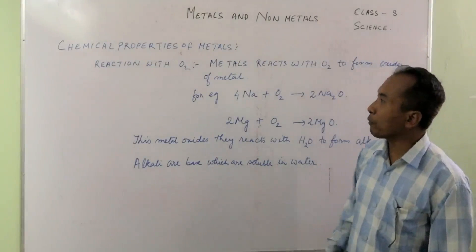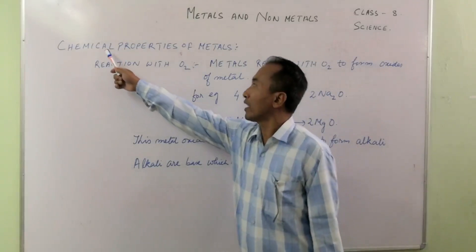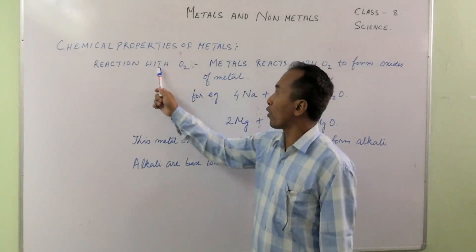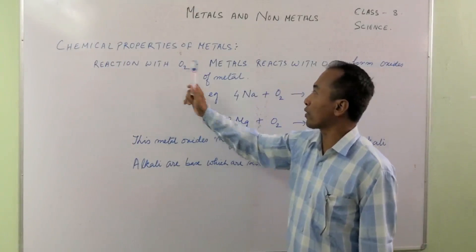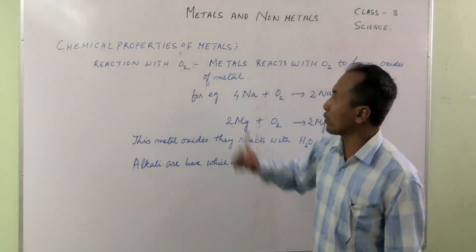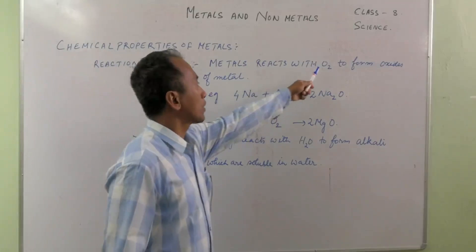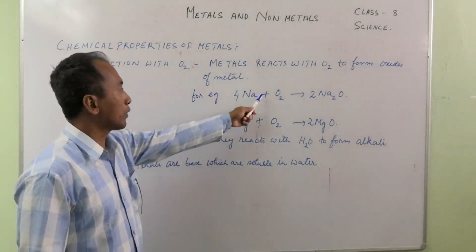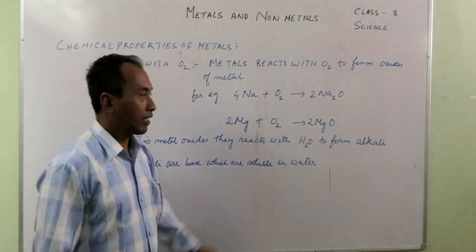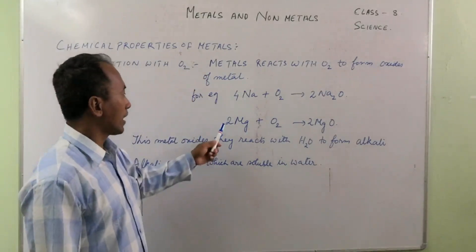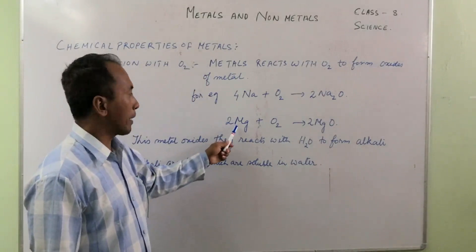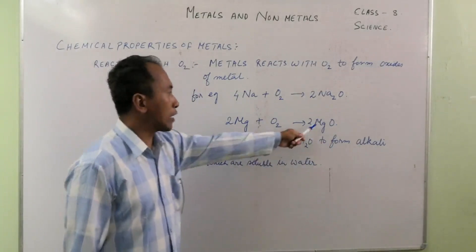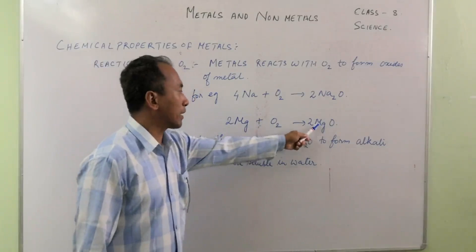After the physical properties of metals, we are going to study the chemical properties of metals. Metals react with oxygen. When a metal reacts with oxygen, it forms a metal oxide — for example, sodium oxide. Another example: magnesium reacts with oxygen to form magnesium oxide (MgO). This is a metal oxide.